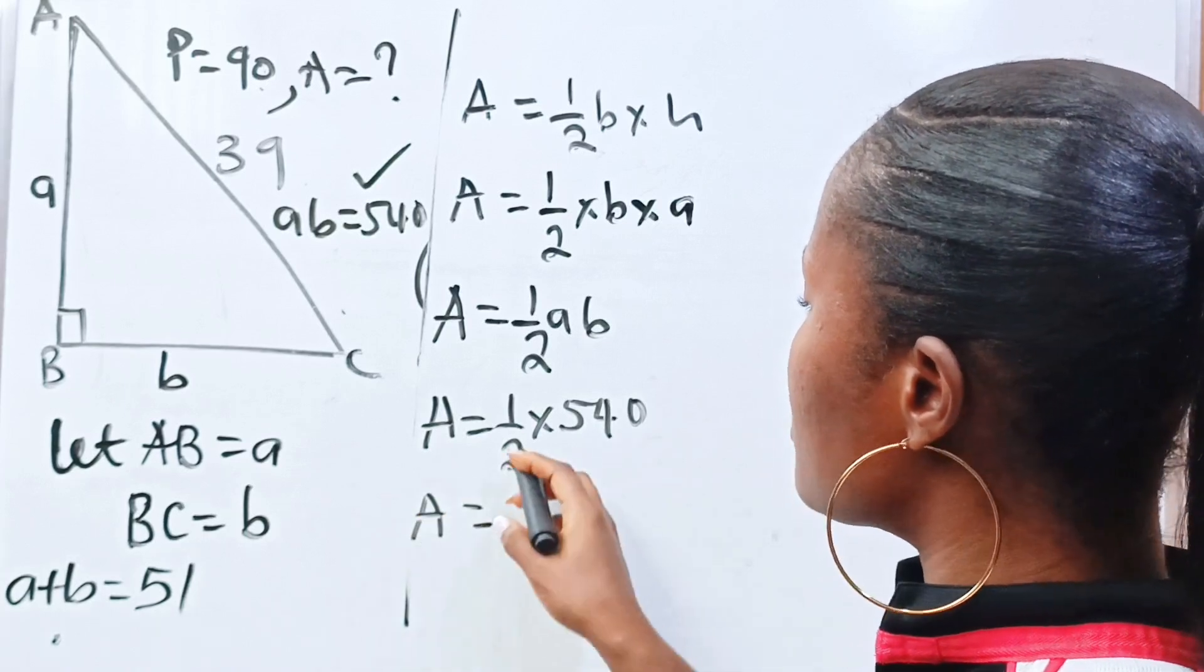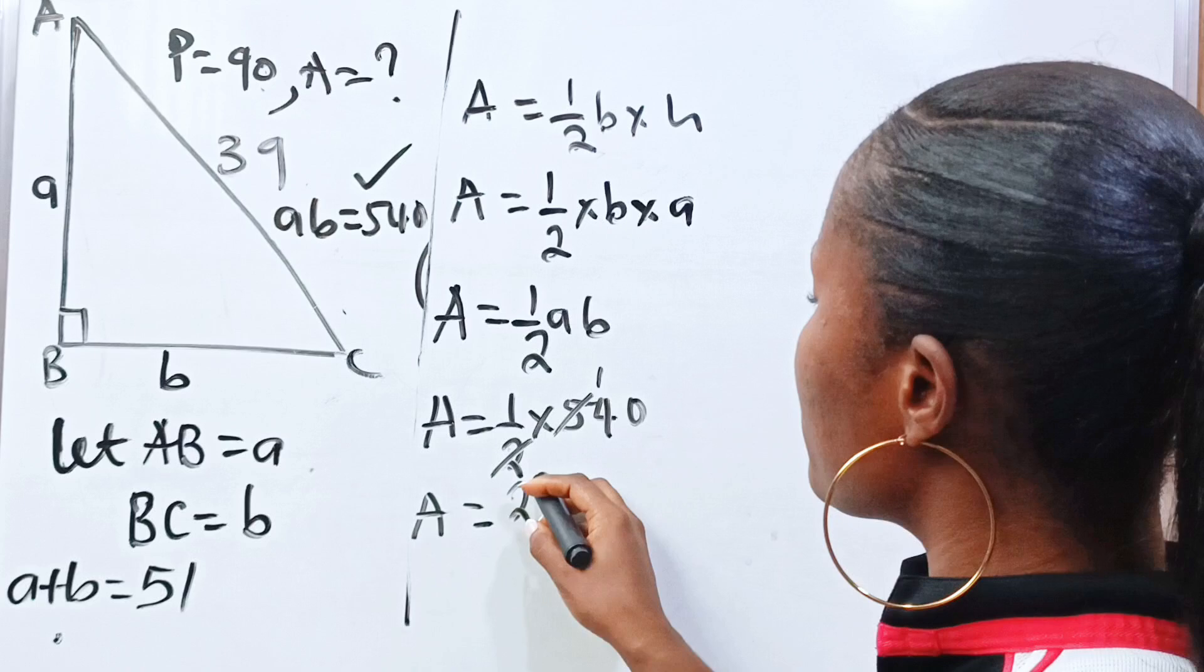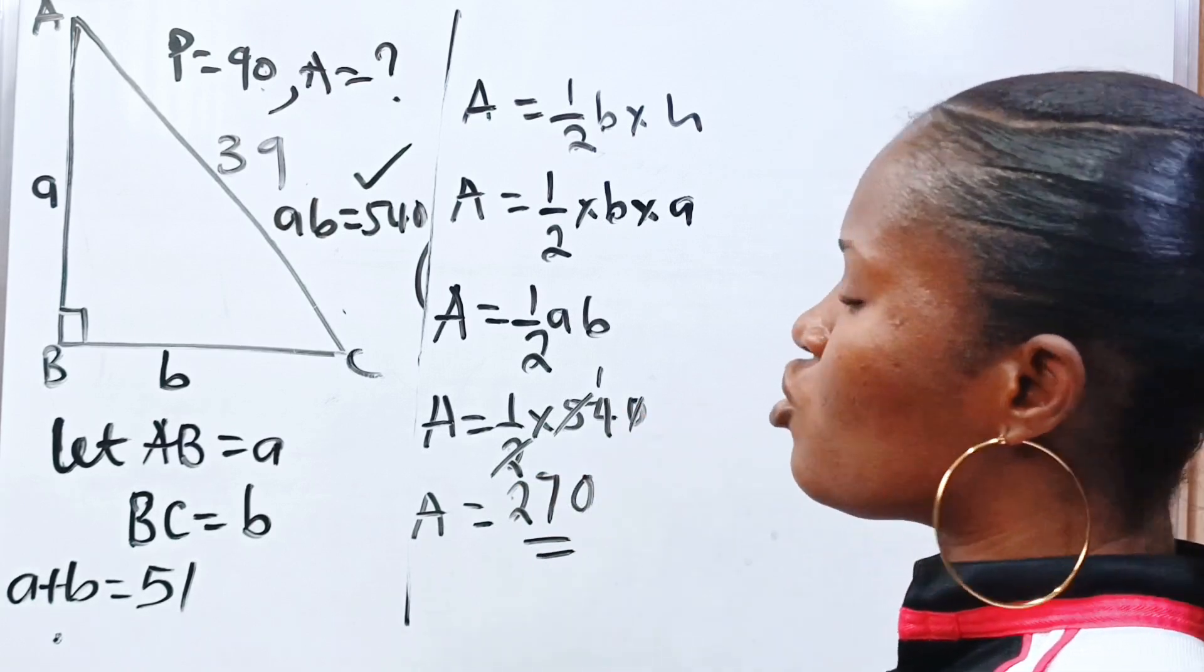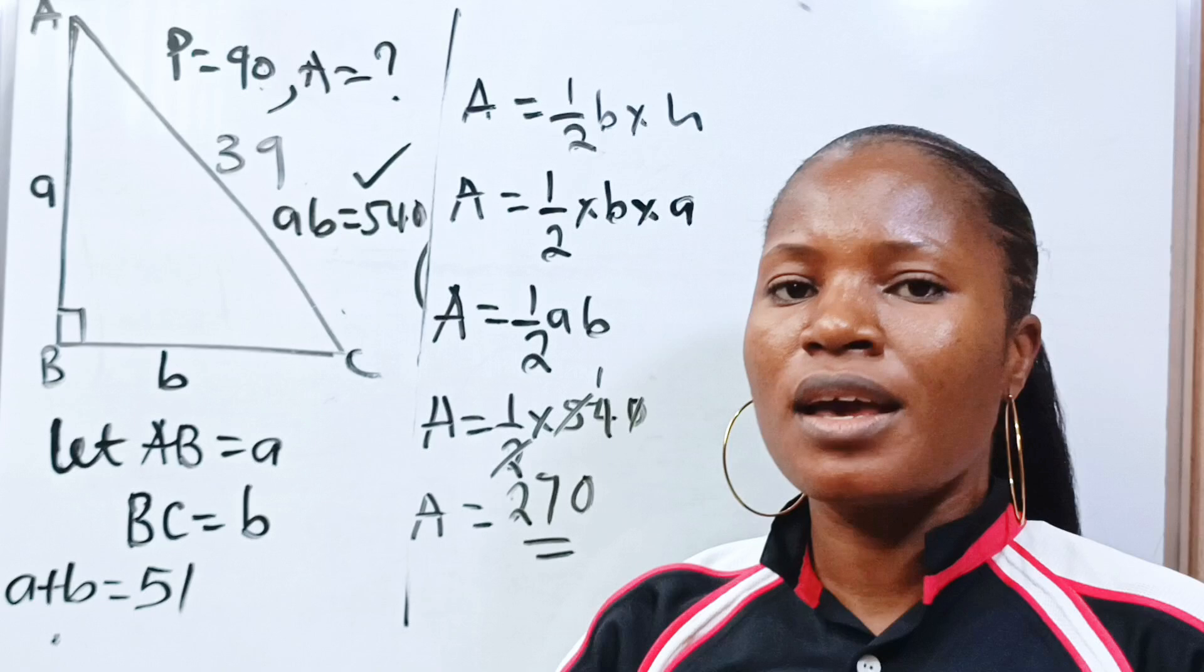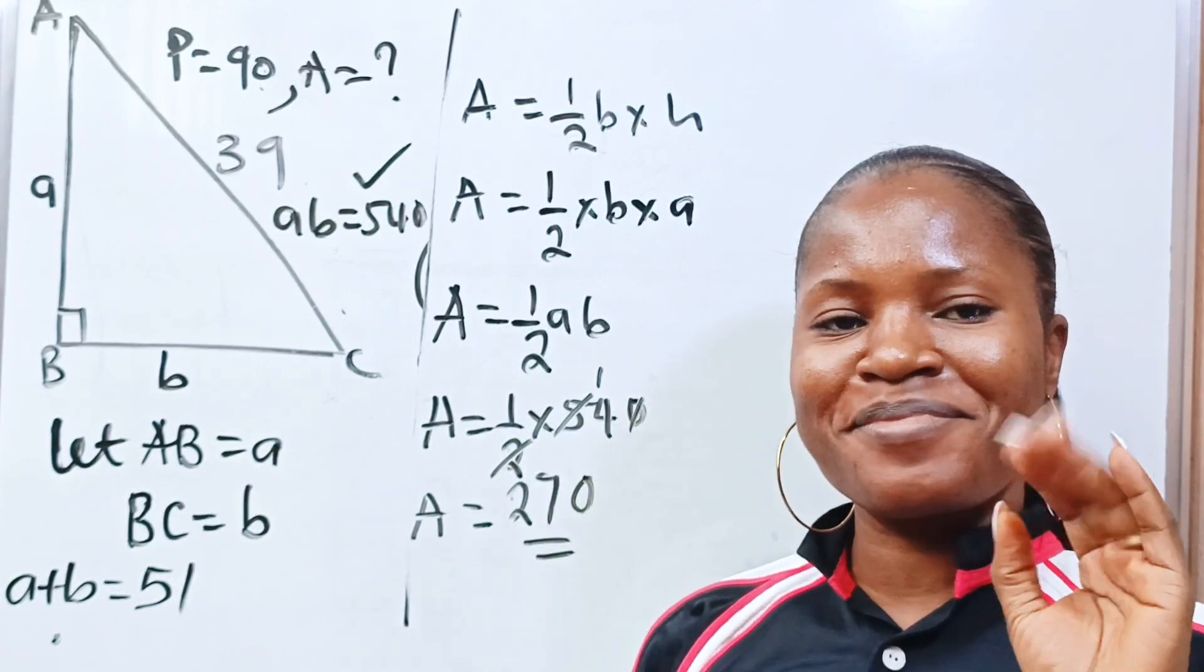So area then is half times 540. So our area is, when 2 divides 5, we have 2 remainder 1. 1 divides 40, we have 7. Divide 0, we have 0. So the area is 270 square units. Thank you so much for watching. Bye.